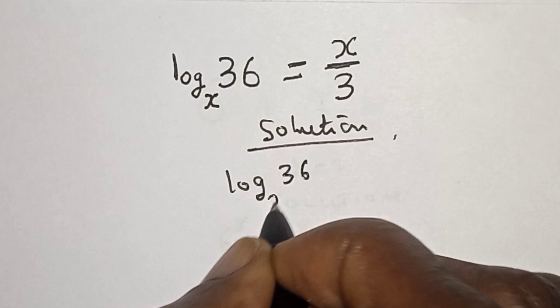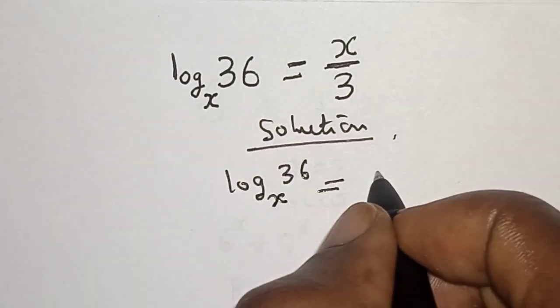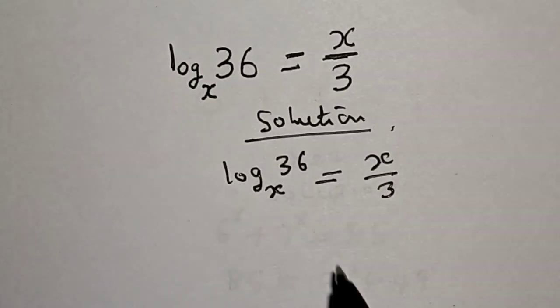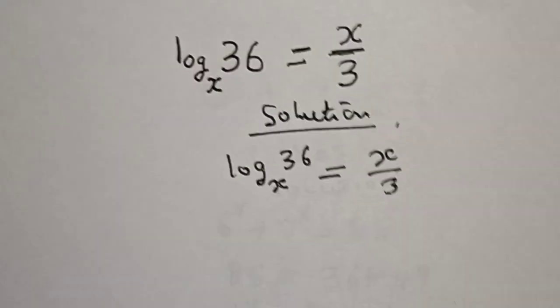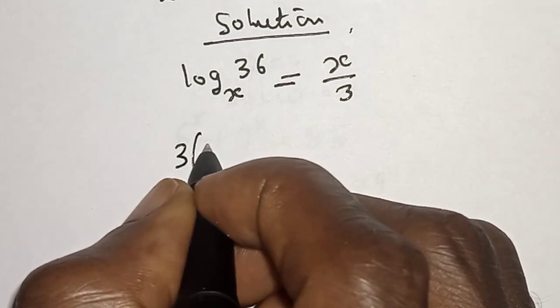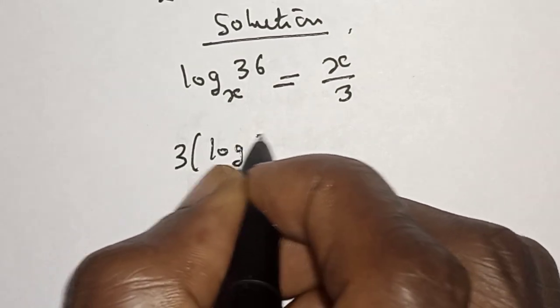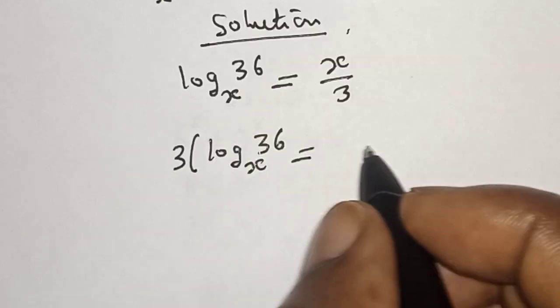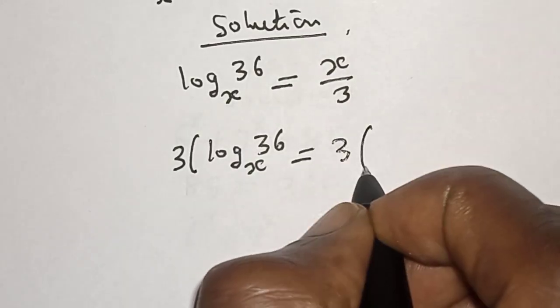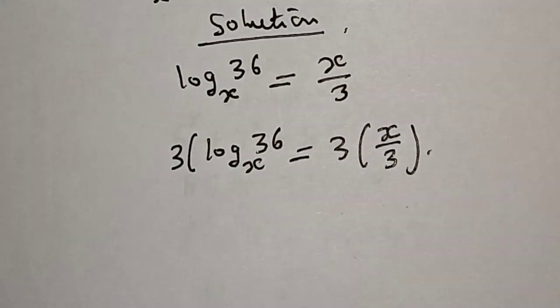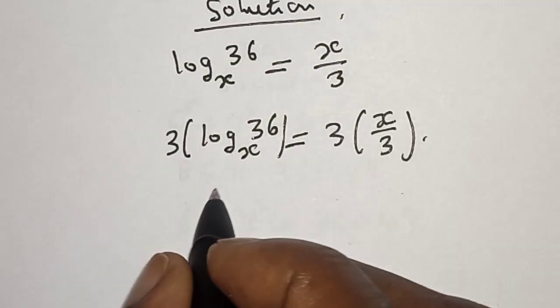Solution. This is log base x of 36 is equal to x over 3. Let's multiply both sides of the equation by 3. That is 3 multiplied by log base x of 36 is equal to 3 multiplied by x over 3.